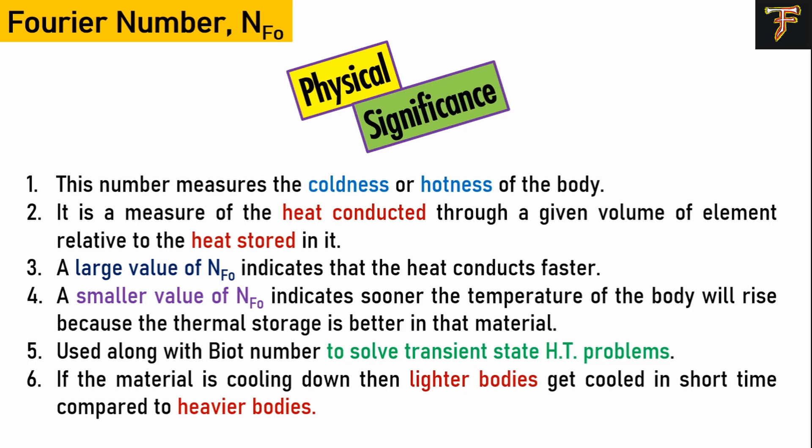Looking at Fourier number values: if it's increasing, heat conduction is good in that material. If it's decreasing, the material's temperature will rise because of mCpΔT, meaning thermal storage is better. We've also seen that we use Fourier number along with Biot number in the special case of transient heat transfer, which is lumped system analysis.